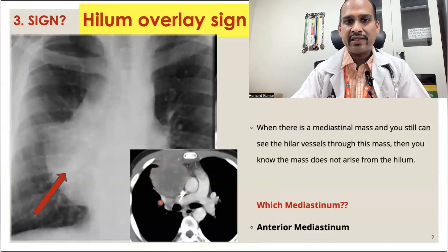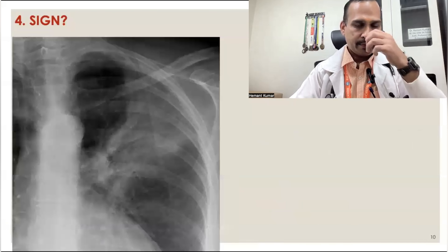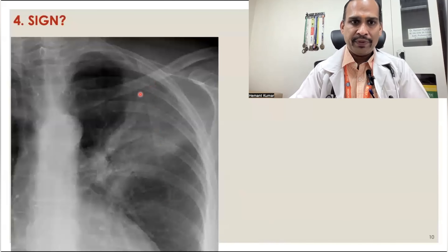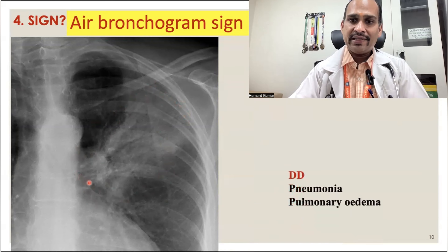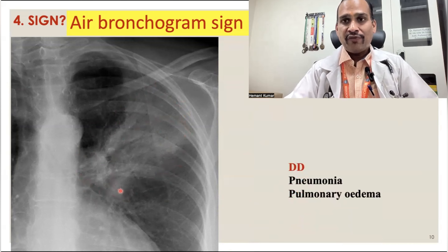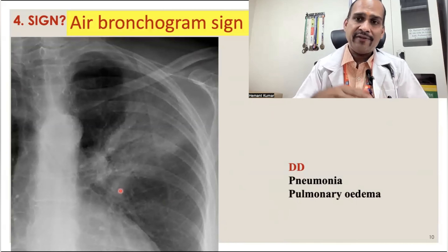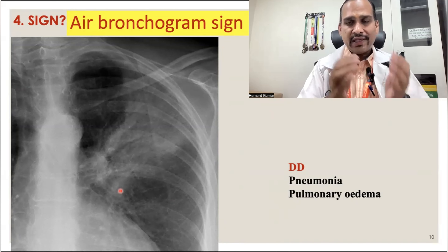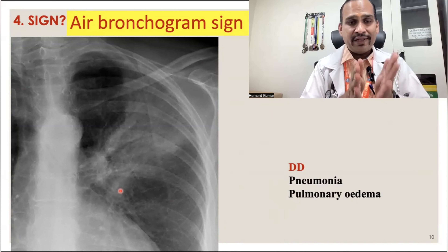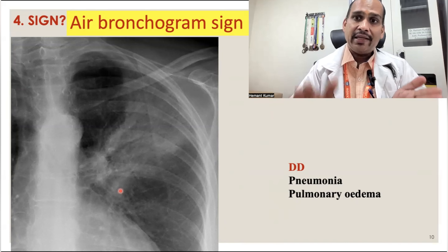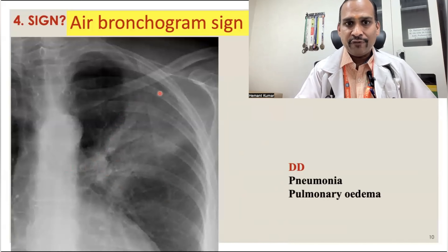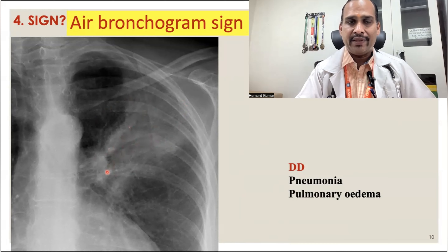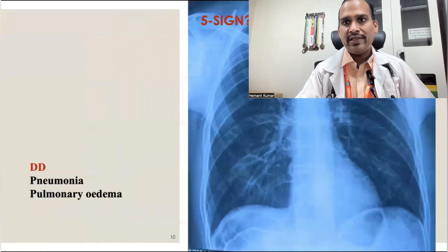Sign 4 is the air bronchogram sign. It is seen in pneumonia or pulmonary edema. Whenever there is filling of alveoli — either by fluid or by exudative material — the alveolar part gets consolidated. But the airway remains patent, and because air is inside the airway, it gives a black shadow. So in white opacity, you can see black branching structures in between — this is the air bronchogram sign, commonly seen in pneumonia.